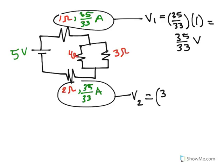V2 is going to be the same formula, V equals I times R. We have 35 over 33 times 2 equals 70 over 33 volts.